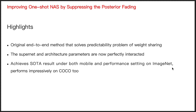The highlight of our paper is an original end-to-end method that solves the predictability problem of weight sharing. The supernet and architecture parameters are now perfectly interacted, and our paper achieves strong results under both mobile and performance settings on ImageNet, and it also performs impressively on COCO too.